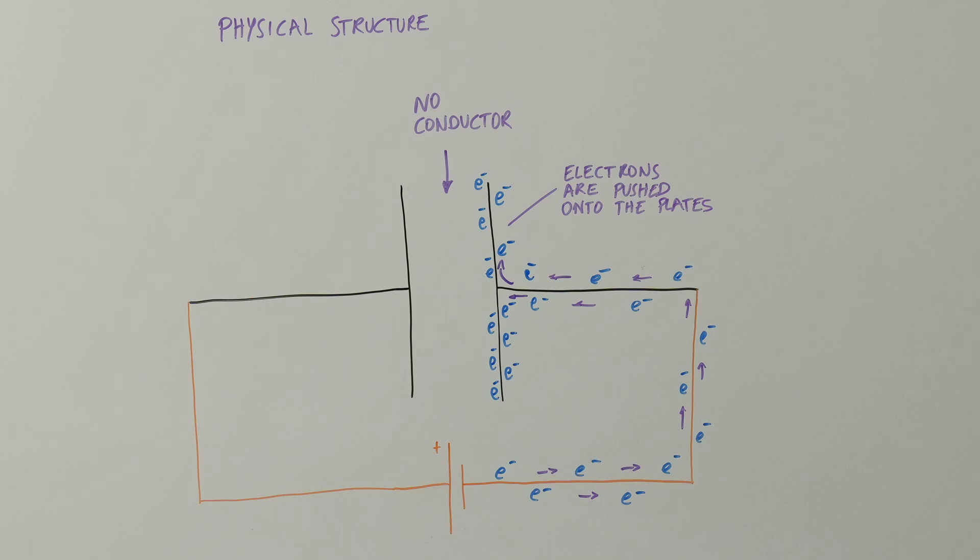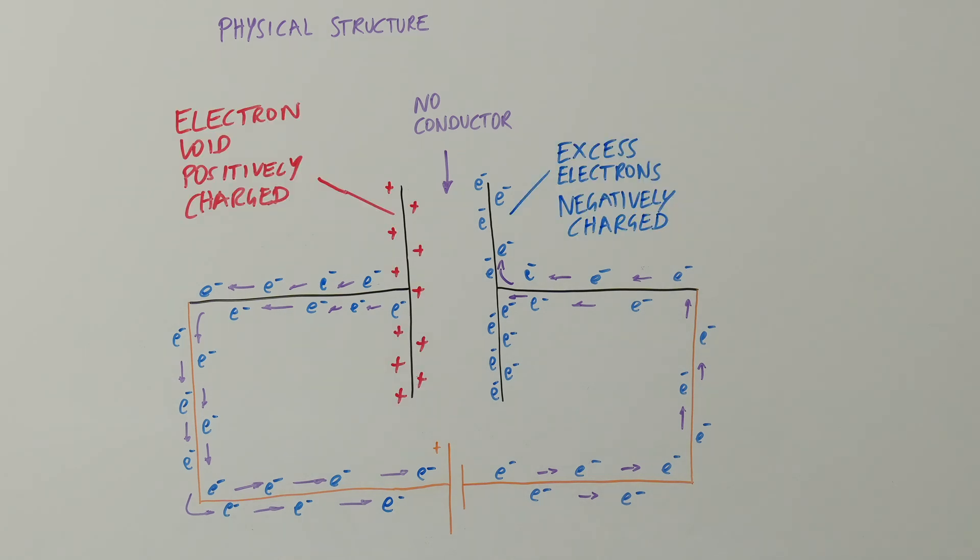Conversely, some electrons from the plate connected to the positive pole of the battery are attracted towards that pole. The electron excess on the plate connected to the negative battery pole makes it negatively charged, while the electron void on the plate connected to the positive battery pole makes it positively charged.